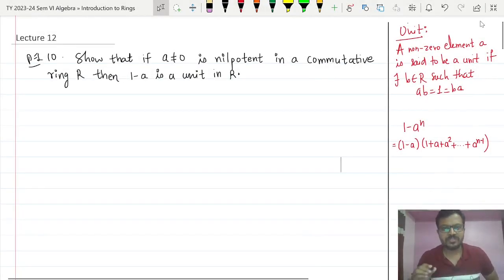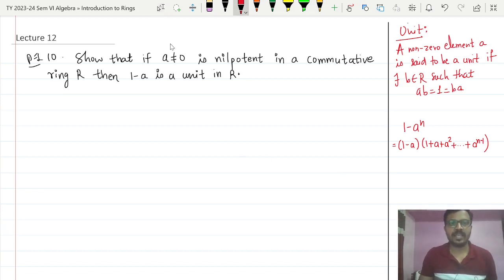Now here we are going to see one more example in ring theory where it is given to us that a is a non-zero element which is nilpotent in a commutative ring R, then 1-a is a unit. If a is nilpotent, then 1-a is a unit. That is what we have to prove.